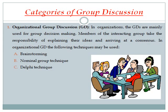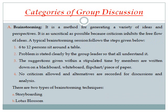First, organizational group discussion. In organizational group discussion, it is used for the purpose of decision making and problem solving. There are basically three techniques available: first, brainstorming; second, nominal group technique; and third, deliberation. Brainstorming is a method for generating a variety of ideas and perspectives related to a particular topic. It is as uncritical as possible because criticism inhibits the free flow of ideas.